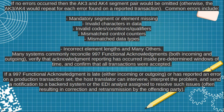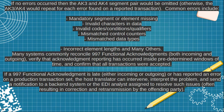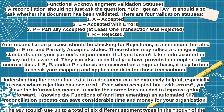Many systems commonly reconcile the 997 functional acknowledgement both incoming and outgoing to confirm that all transactions were accepted within a pre-determined window of time. If a 997 functional acknowledgement is late — either incoming or outgoing — or has reported an error on a production transaction set, the host translator can interpret the problem and send a notification to the back-end system or the EDI analyst assigned to resolve such issues, often resulting in correction and retransmission by the offending party.